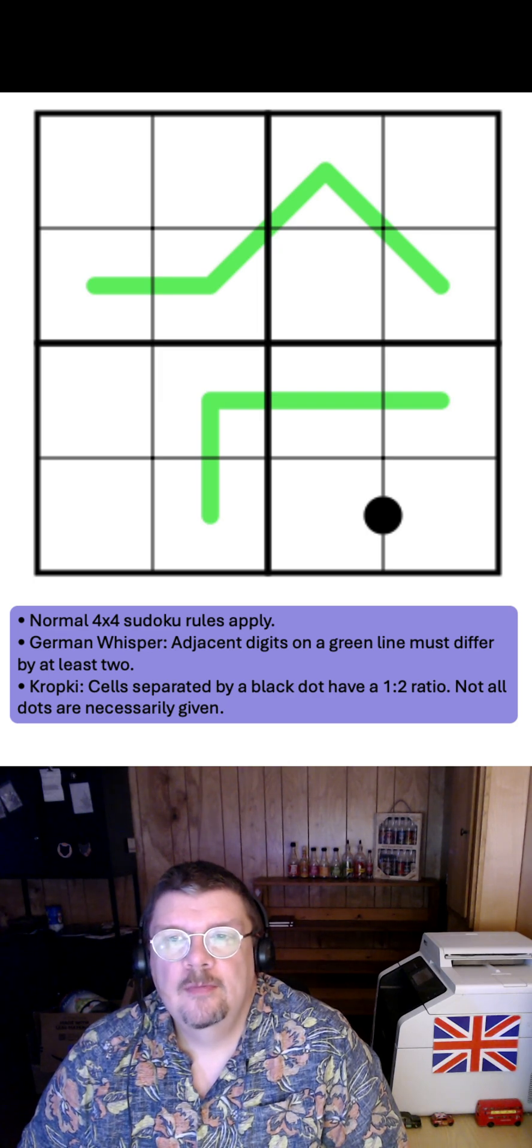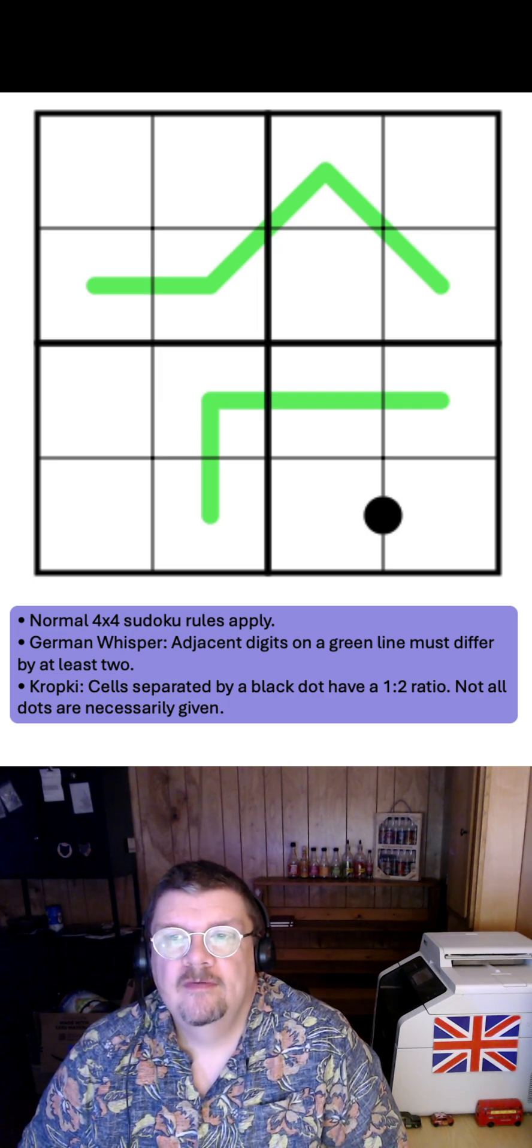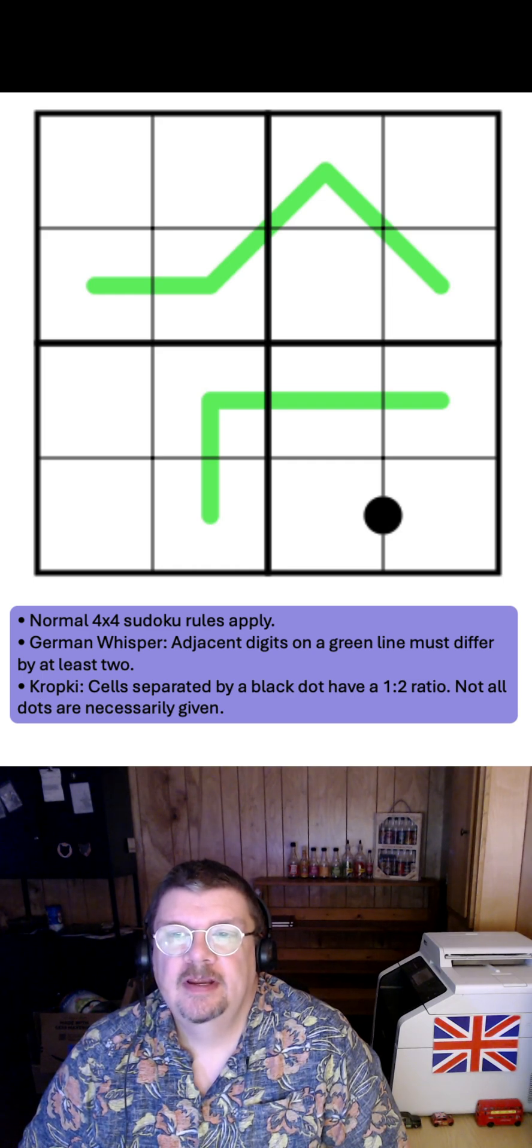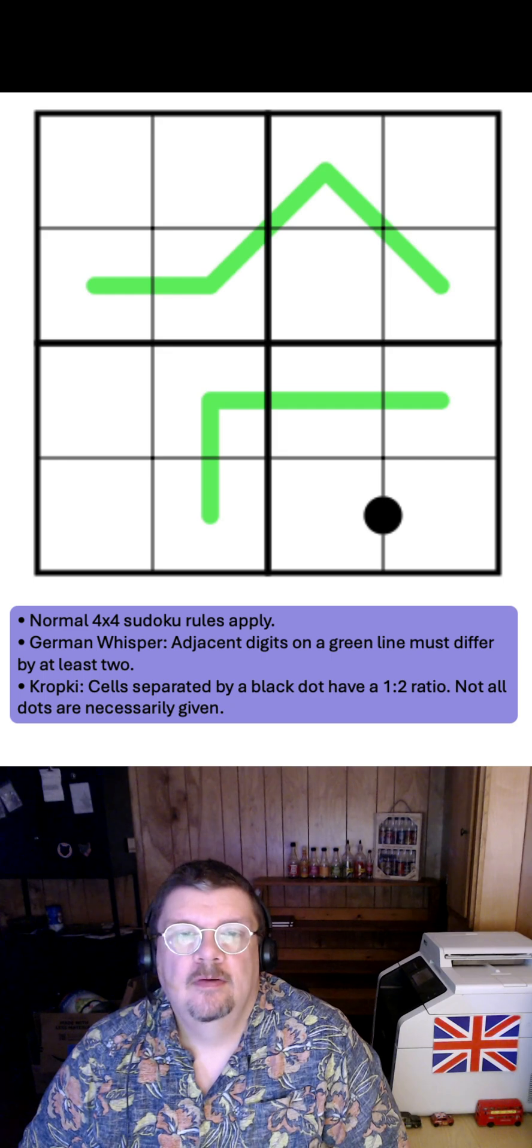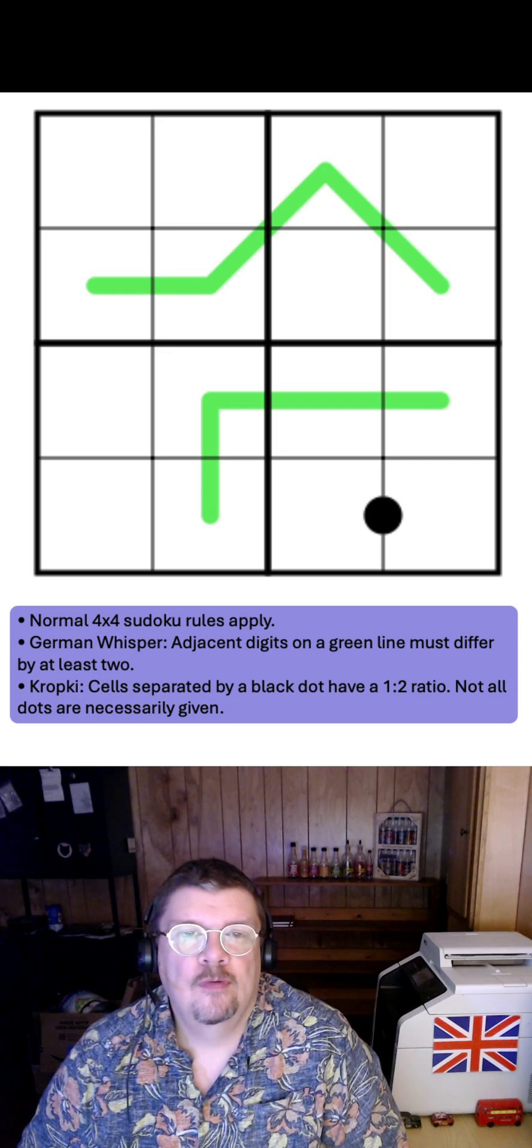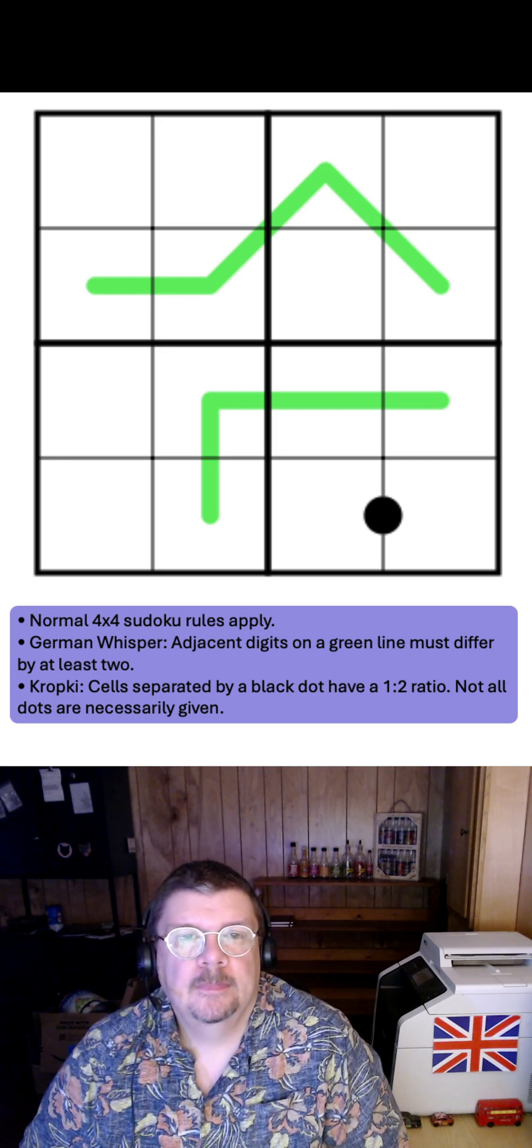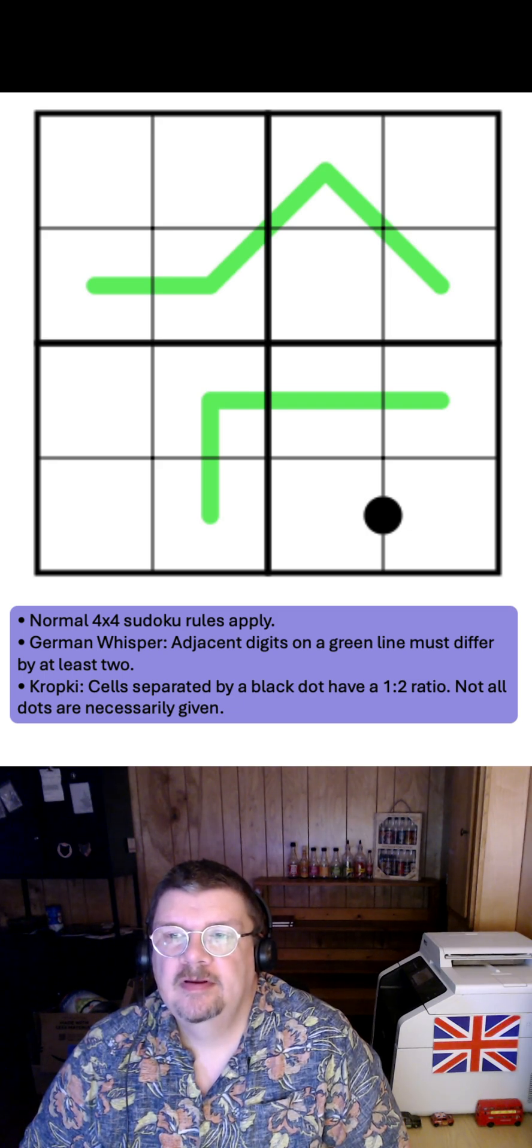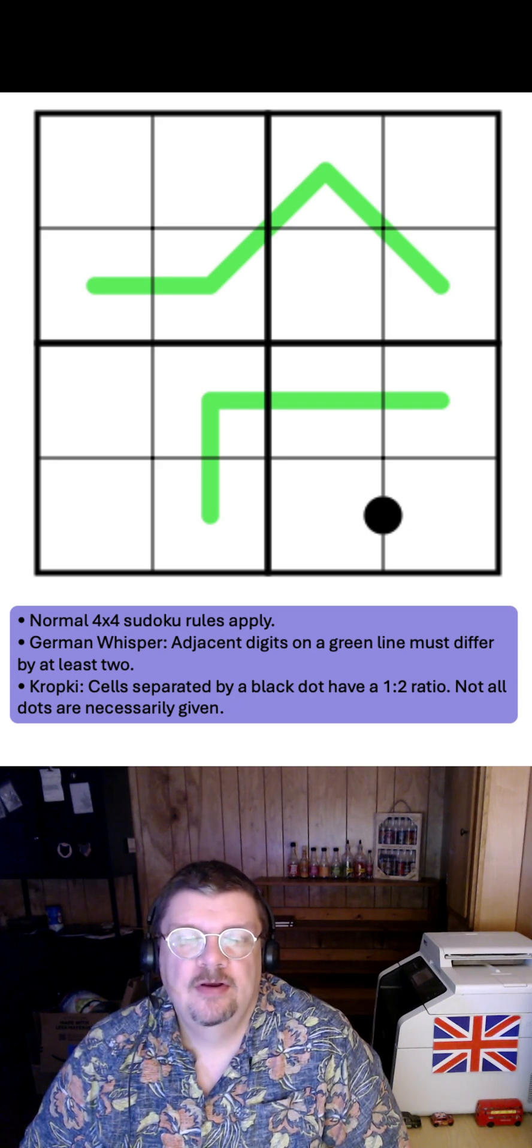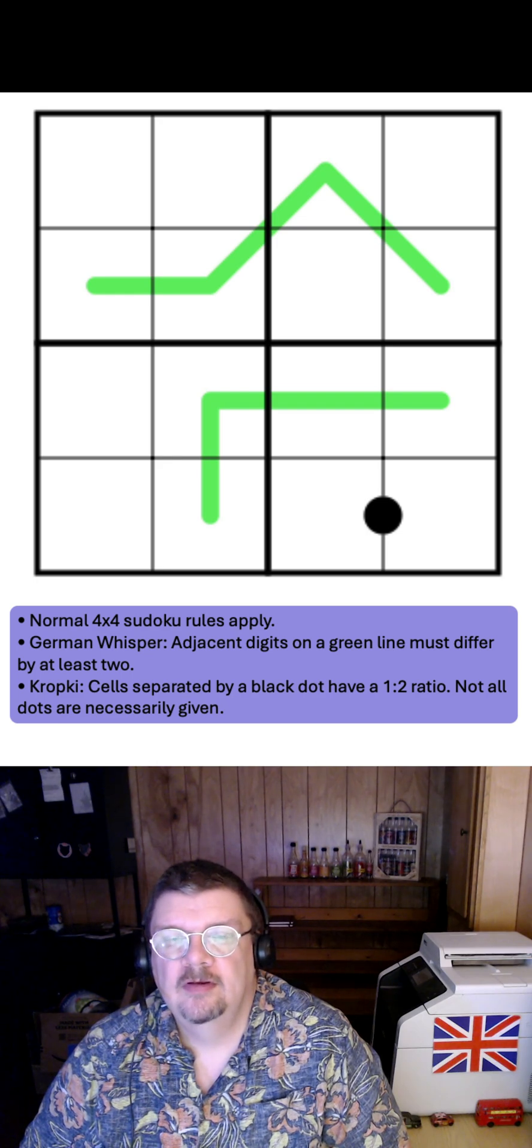Wisnack by Nell Gwynne. Normal 4x4 Sudoku rules. German Whisper: adjacent digits on a green line must differ by at least 2, which is the standard for a 4x4 German Whisper line. And crop key cells separated by a black dot have a 1 to 2 ratio. Not all dots are necessarily given.